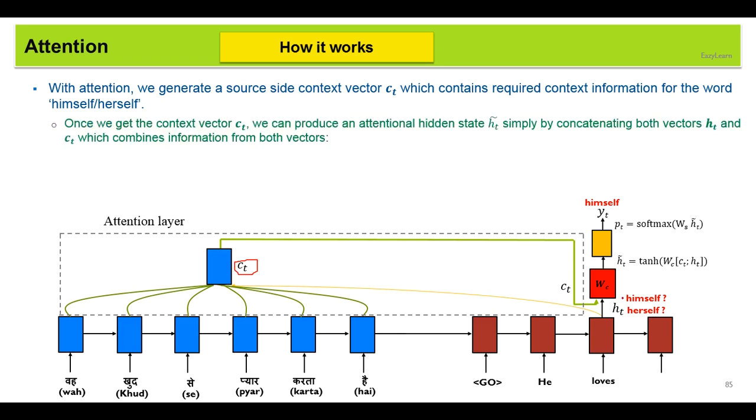Once we get the context vector ct, we can just concatenate both and pass it to another layer. After multiplying this weight matrix wc and then applying the tanh activation function, we get the ht tilde as the attentional hidden state. This ht tilde can be passed to the softmax layer to produce the probability distribution.